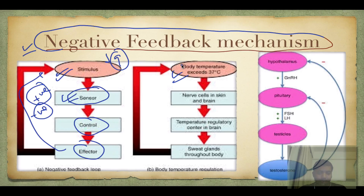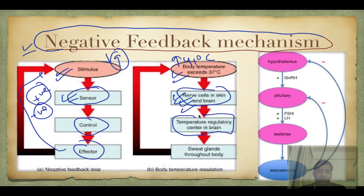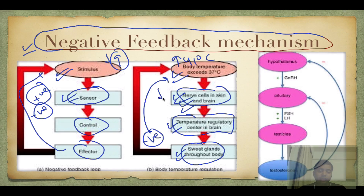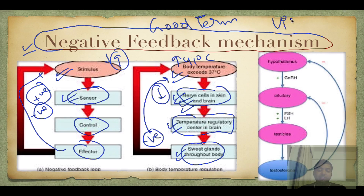Nerve cells in skin and brain detect it, and the temperature regulatory center in the brain — the hypothalamus — causes sweat glands to release sweat, giving a negative feedback that brings temperature down. So negative feedback is actually a good term. Positive feedback, on the other hand, is a very vicious cycle — positive equals vicious, that is bad. Negative equals a virtuous cycle — that is good.